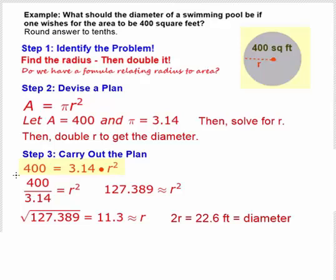Now to get r², we divide both sides by 3.14, and 400 divided by 3.14 is 127.389. This gives us the equation 127.389 = r².